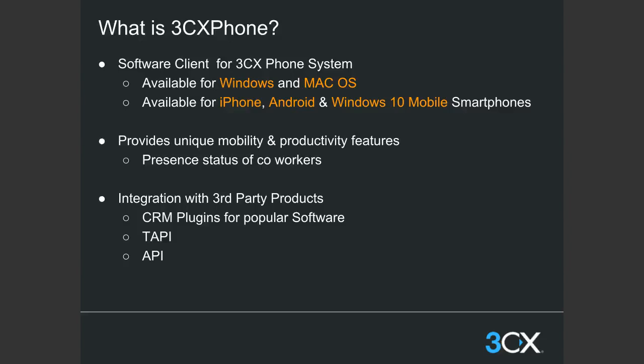3CX phone clients provide unique mobility and productivity features, such as presence status of coworkers. With your 3CX phone, you'll be able to see immediately who's available, who's on the phone, and make and receive calls to your coworkers, both internally and externally.